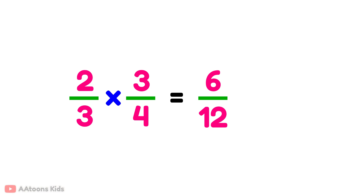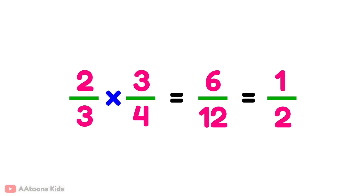Third step, simplify. 6 over 12 can be simplified by dividing by 6. 6 divided by 6 is 1 and 12 divided by 6 is 2. So the final answer is 1 over 2.